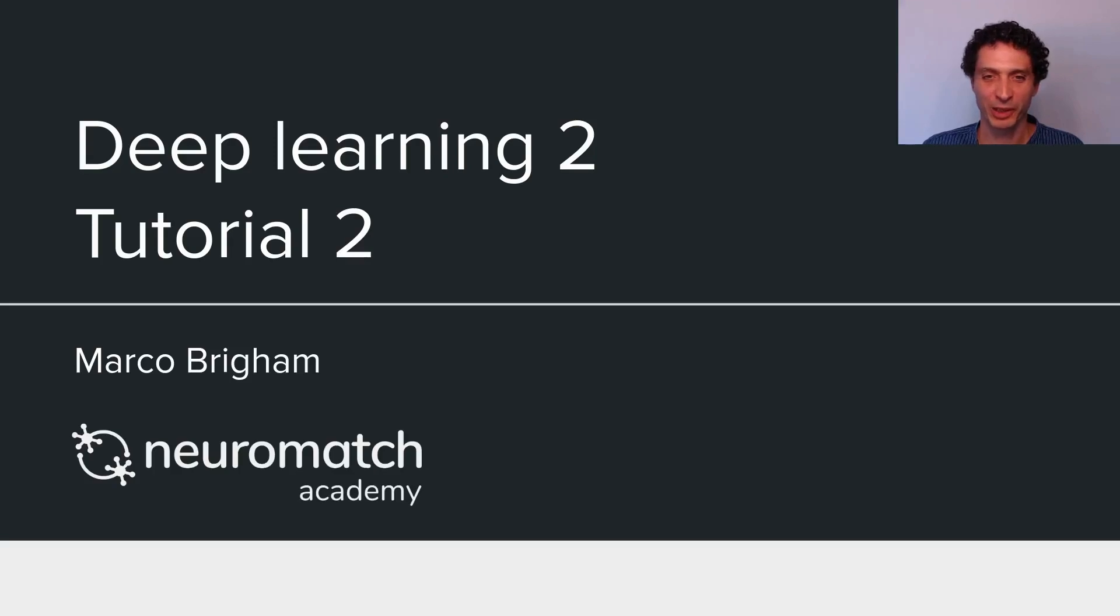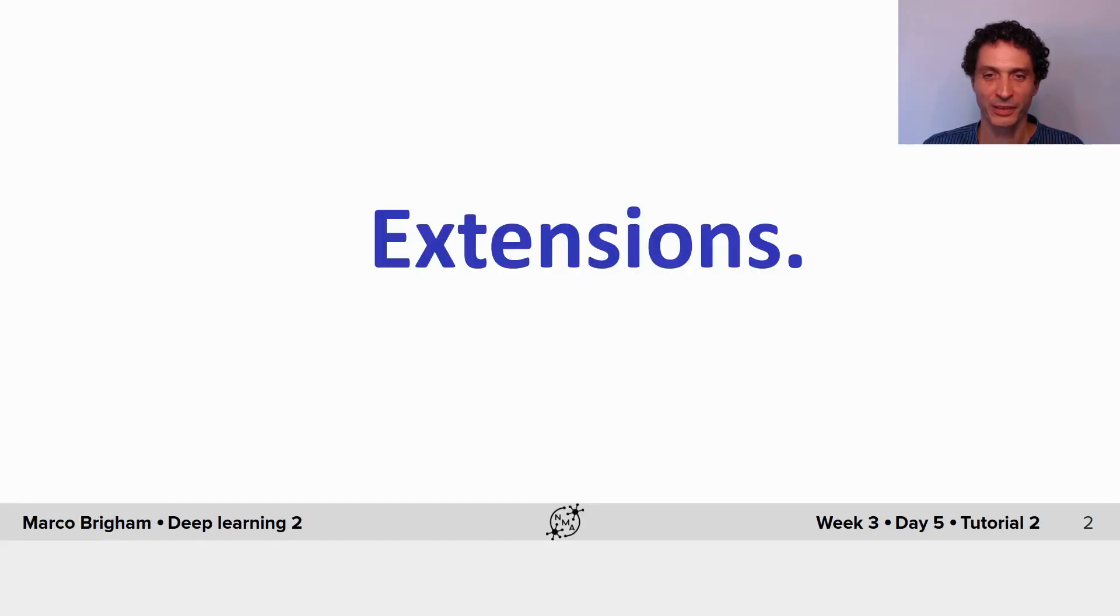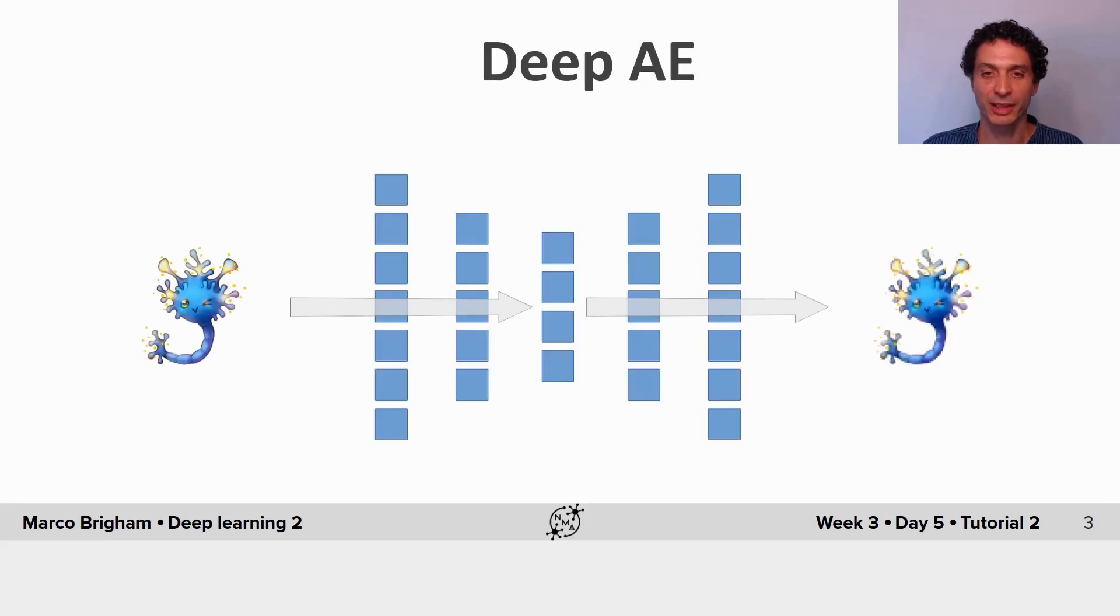Hi, this is Marco Brigham and welcome to the second tutorial of Deep Learning 2. In this tutorial, you learn to build more powerful autoencoder models, starting with a deeper version where we add additional hidden layers.